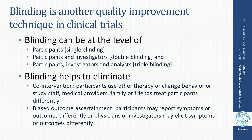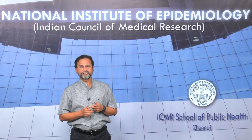Blinding is another quality improvement technique often used in clinical trials. Single blinding is when participants do not know what they are getting — whether drug A or drug B — though investigators may be aware. Double blinding is when both participants and investigators do not know the drug allocation, because the nature, color, and appearance of the interventions is exactly identical. Triple blinding is when the analysts are also kept blinded while they analyze the results. This stepwise blinding from single to double to triple eliminates subjectivity in judgment of outcomes in a large number of instances.